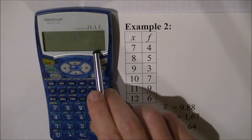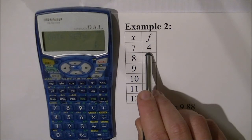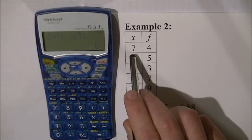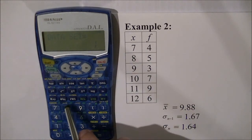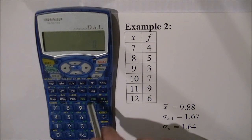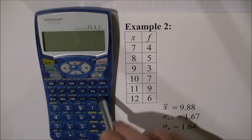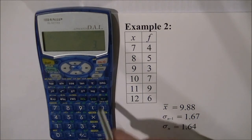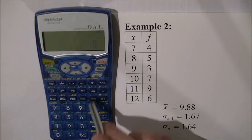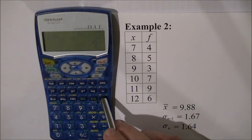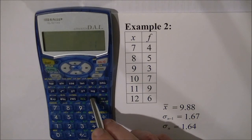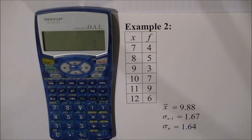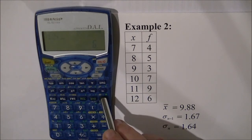Now it says that there's a data set of one even though we've just inputted four scores it's indicating that we have inputted the data set of seven. We're going to put eight in five times STO five M plus, nine STO three M plus, 10 STO seven M plus, 11 STO nine M plus and 12 STO six M plus.